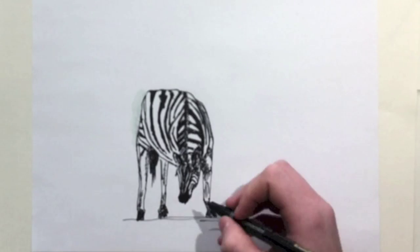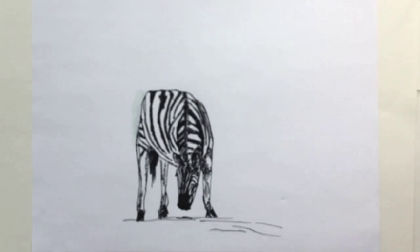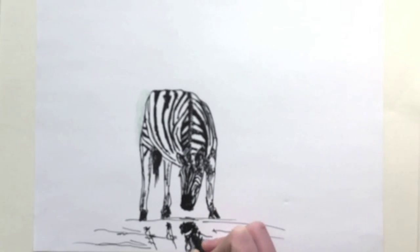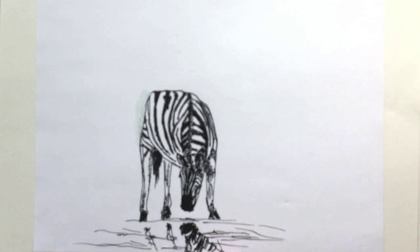Whenever the zebra was reminded of its stripes, its life appeared an uncompromising black or white.